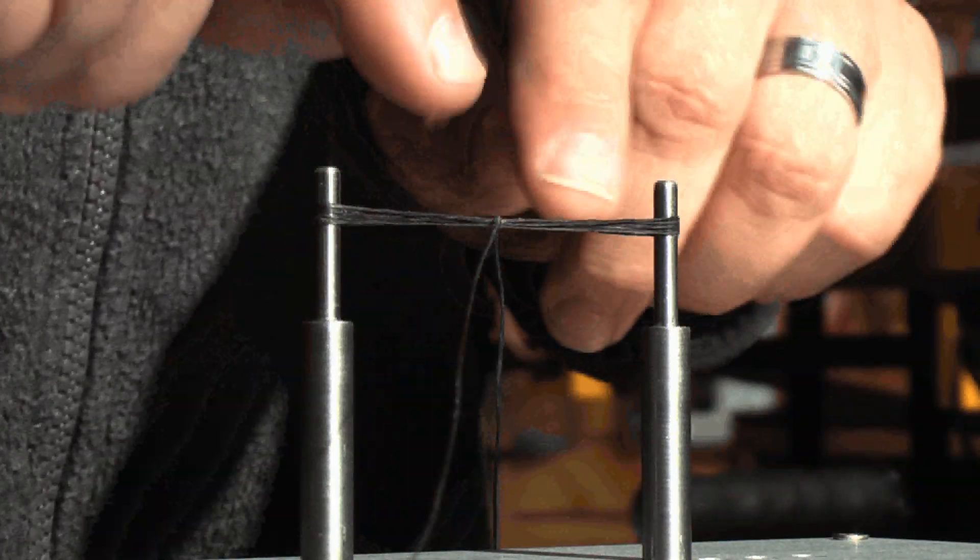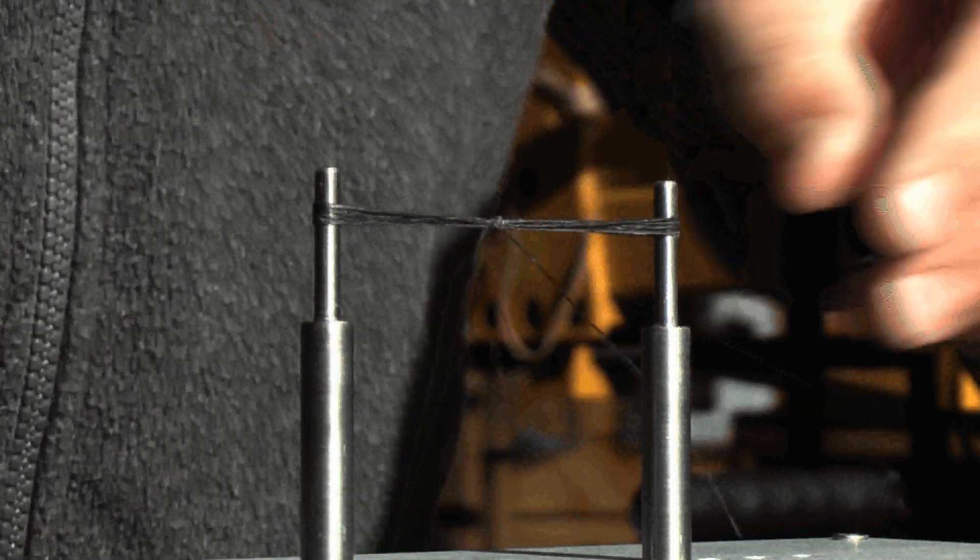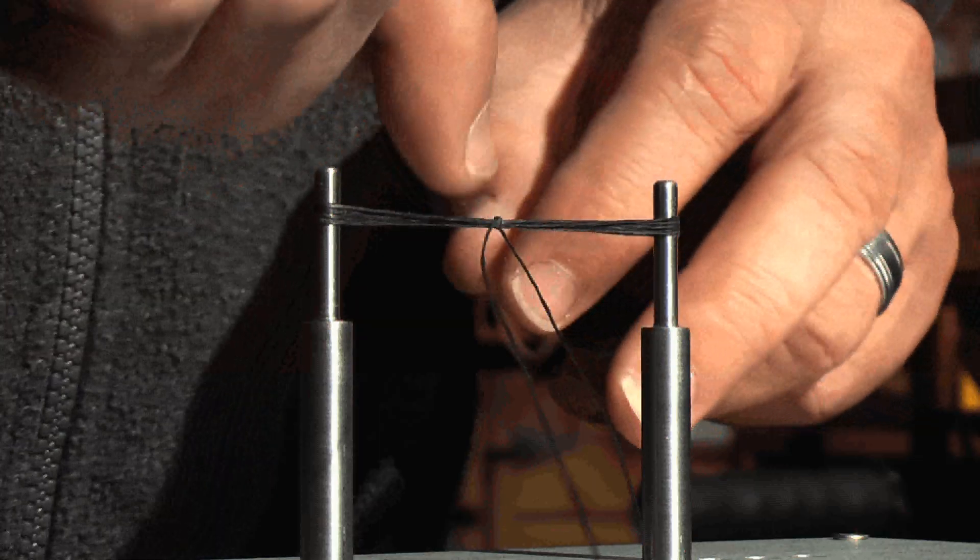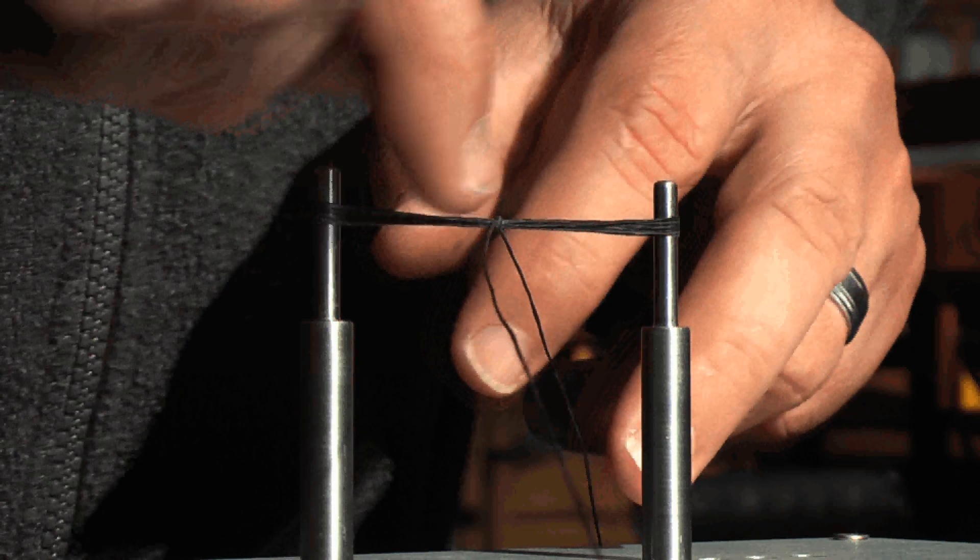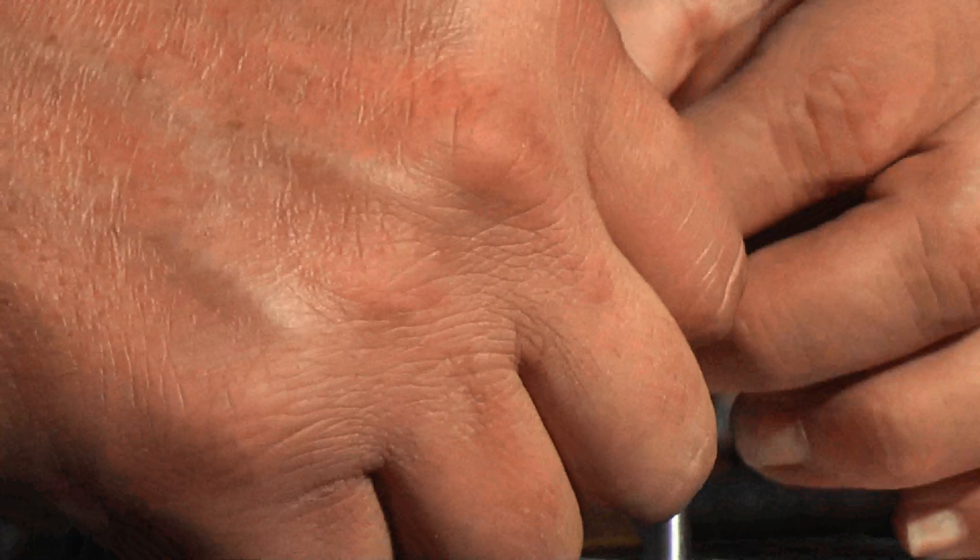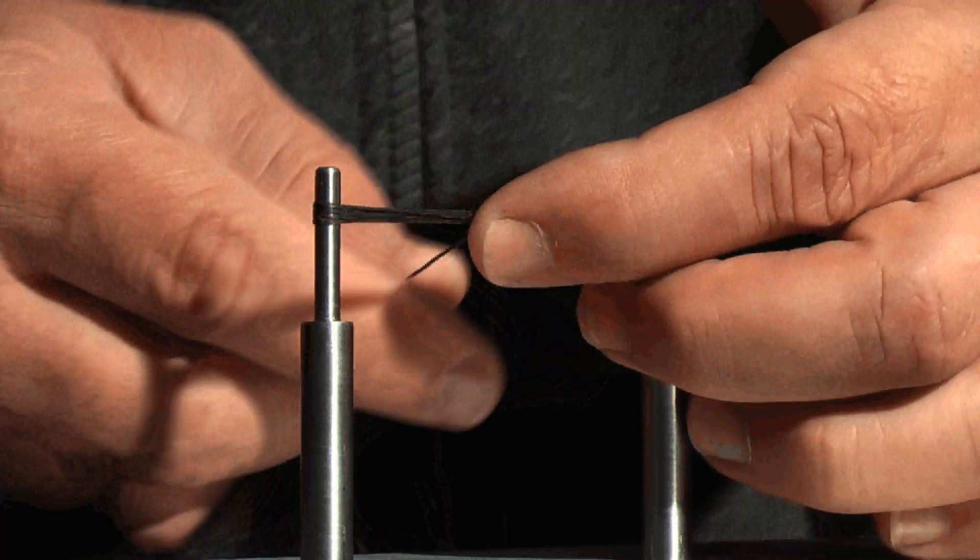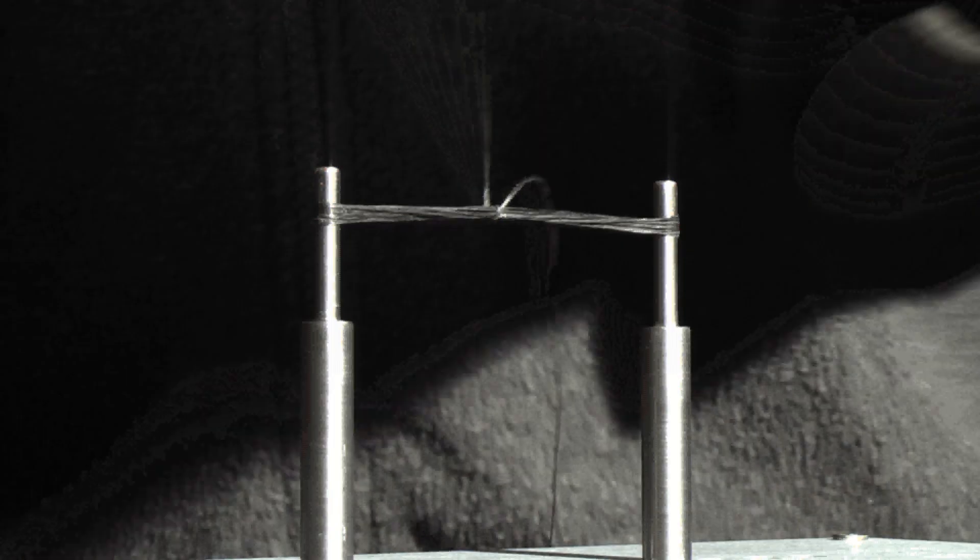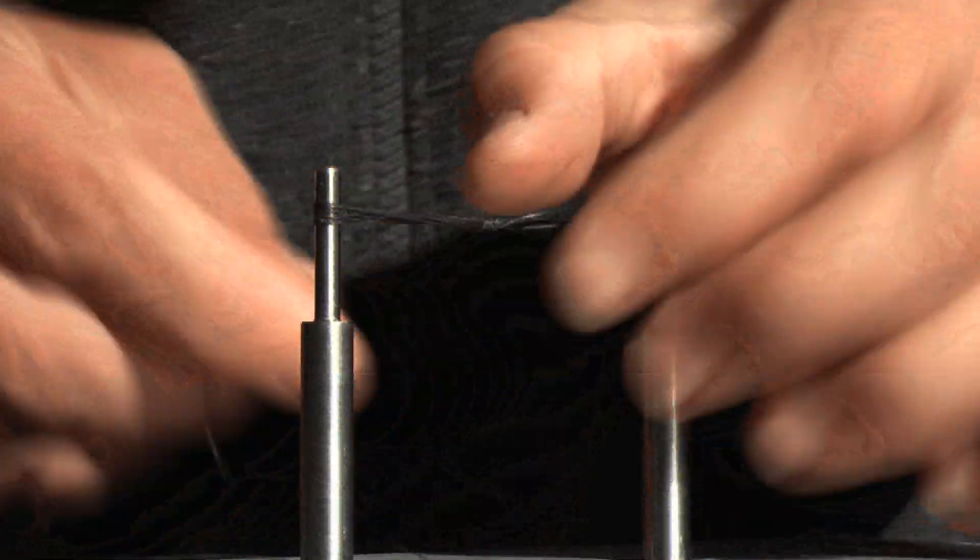Now you will notice that on the knot, on the top, you'll see there's a tag going to the right of the knot and one tag going to the left of the knot. We're going to first take the tag that's on the right-hand side. We're going to start winding the loop about 10 or 12 times.